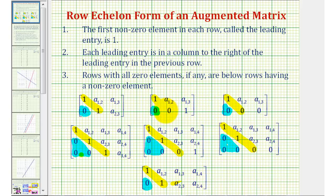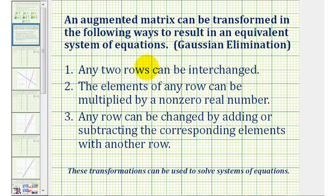Also notice all the elements below the main diagonal or in the lower triangle must be zero. In order to transform an augmented matrix, we use a process called Gaussian elimination, which means any two rows can be interchanged, the elements of any row can be multiplied by a non-zero real number, and any row can be changed by adding or subtracting the corresponding elements with another row.